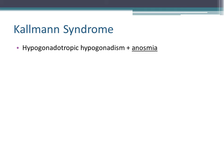Kallmann syndrome is, by definition, hypogonadotropic hypogonadism plus anosmia. I would like to emphasize on the anosmia part because there are other types of hypogonadotropic hypogonadism which are not associated with anosmia, and thus they are not called Kallmann syndrome.